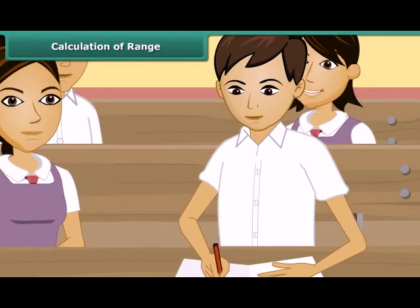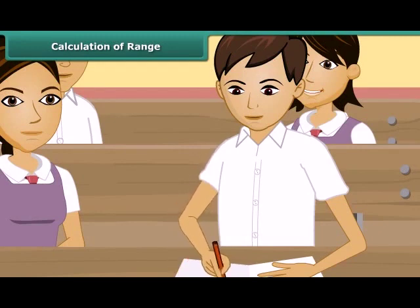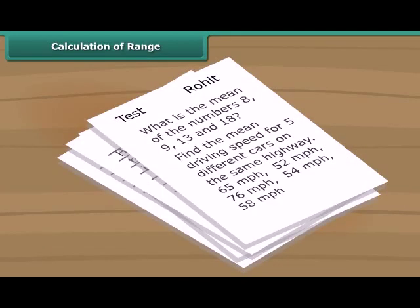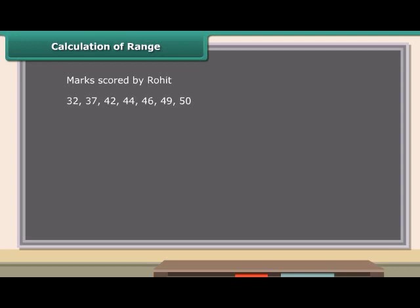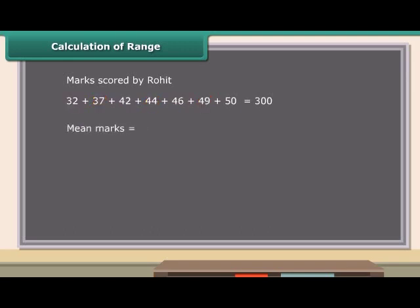Rohit is an intelligent and very studious boy in the class. He gave his maths test 7 times to improve his marks. The data shown here displays the marks scored by Rohit. Can you calculate the mean test marks of Rohit? Let us first add up the marks — the sum is 300. We know he gave the maths test 7 times. So the mean marks of Rohit are equal to 300 divided by 7, which is equal to 42.86.